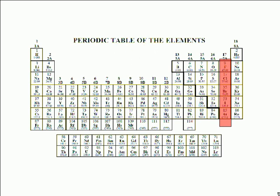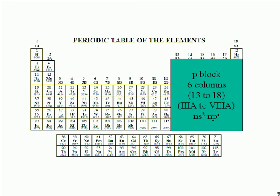And for atoms in group 8a, or column 18, it's p6, except for helium. These are the only elements with electrons in the valence p subshell. All of these elements are said to belong to the p block. Their valence configurations are all of the type ns2 npx, where n is the period or horizontal row where the element belongs, and x is 1 for column 13, 2 for column 14, 3 for column 15, 4 for column 16, 5 for column 17, and 6 for column 18.